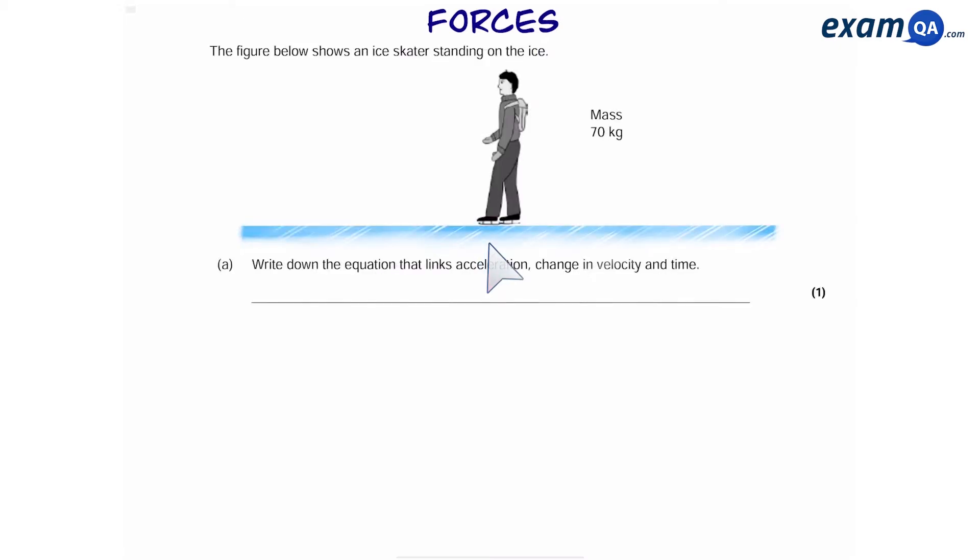So here's another question on forces. Below, we have an ice skater standing on ice. Write down the equation that links acceleration with change in velocity and time. So this equation is acceleration equals V minus U over T.